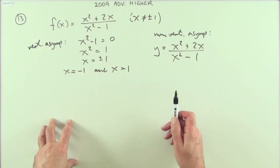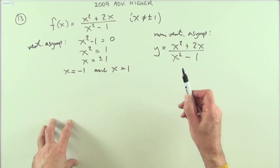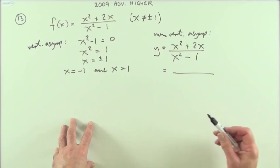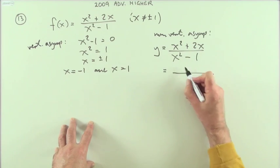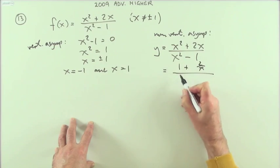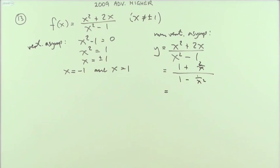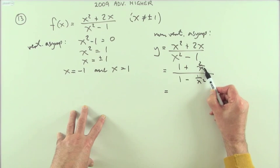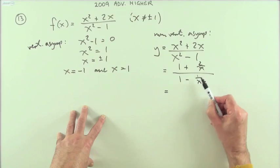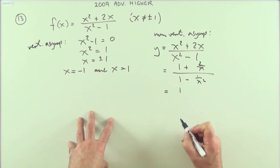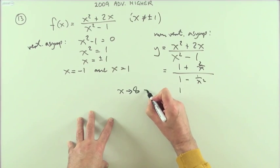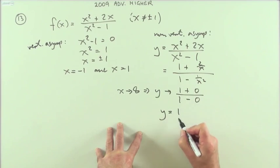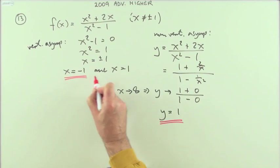I've got y = (x² + 2x)/(x² - 1). If I'm not interested in establishing how it approaches these asymptotes, simply what is the value of this limit as x tends to infinity, then I can use that device of dividing by the highest power of the variable. Dividing everything by x² gives 1 + 2/x over 1 - 1/x². As x tends to infinity, y tends to 1. So y = 1 is the non-vertical asymptote.